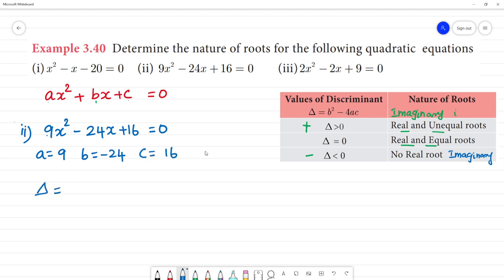Formula substitute delta equal to b square. b square minus 4ac. B square, minus 24 square. 24 square is 576. Minus 9 times 4 is 36, 36 into 16. So delta equal to 576 minus 576. So delta equal to 0.